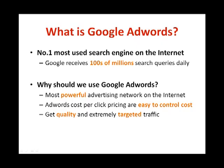Google has been winning more web users over the years. Today, Google is the number one most used search engine on the internet, receiving hundreds of millions of search queries on a daily basis. They are the most powerful advertising network on the internet and the most preferred network for internet marketers. Google AdWords cost-per-click pricing is easy to control — no matter what your budget is, Google only charges your ad when a person clicks on it.